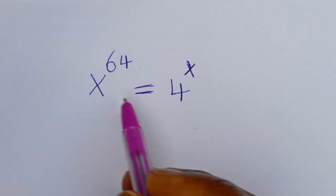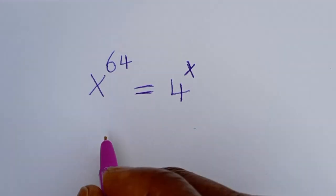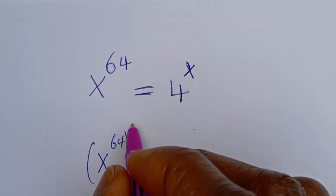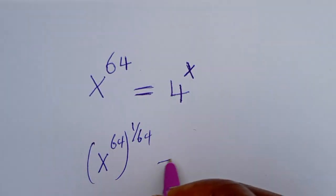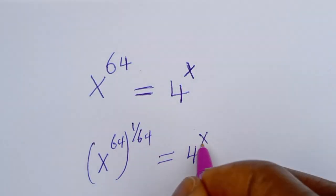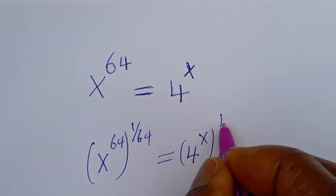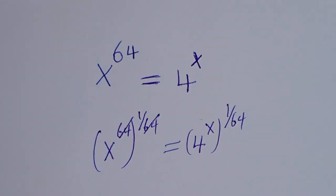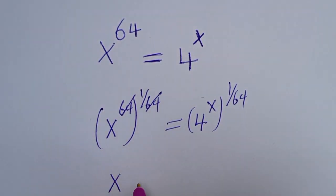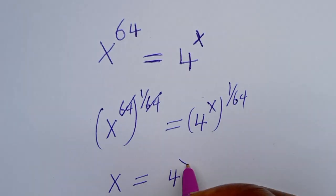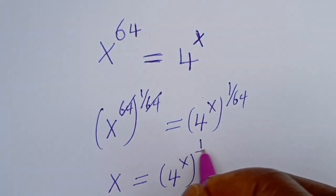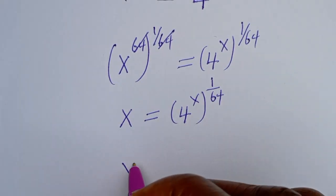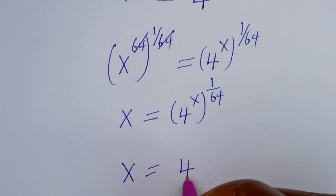Let's multiply the exponent of both sides by 1 over 64. That is, s to the power of 64, raised to the power of 1 over 64, is equal to 4 to the power of s, raised to the power of 1 over 64. This will cancel, giving us s is equal to 4 to the power of s to the power of 1 over 64.